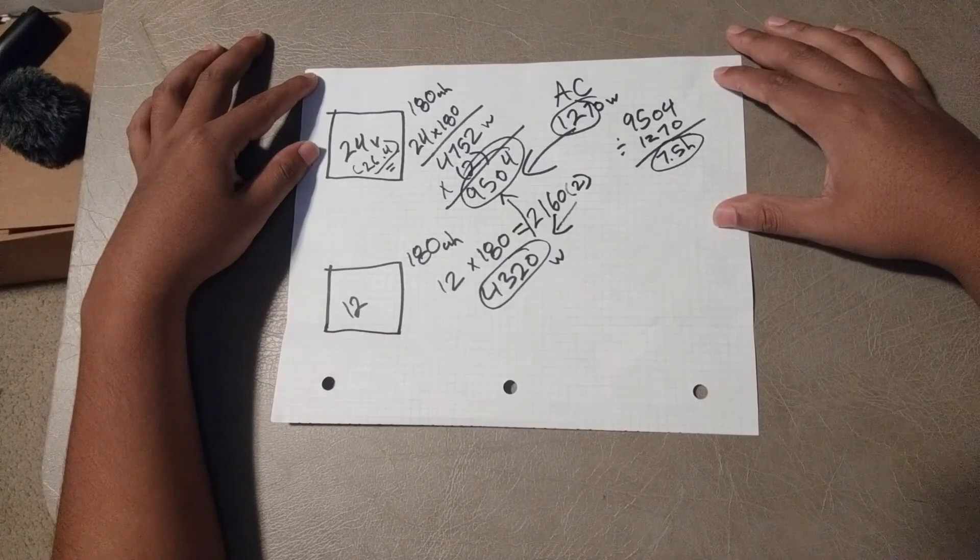When we first started looking up online at different options for our system to see what was out there, we didn't really find much that could power an AC off the grid or microwave. So if you guys are curious on how all that is done specifically like with schematics and wiring diagram, we have that info now because we've been through it. If you guys want to learn more about that go ahead and check out our website and also follow us on Instagram. We post a lot of information in there regularly about our van and just what we do in general.